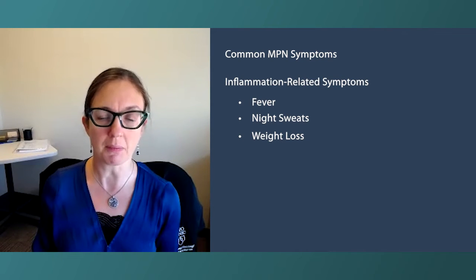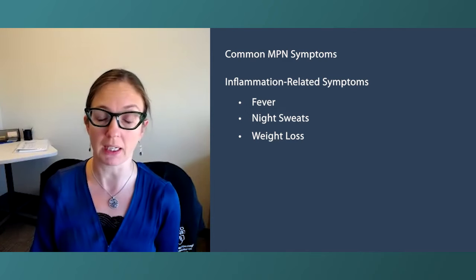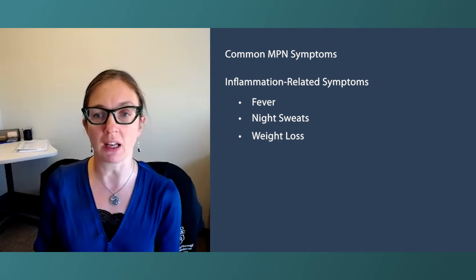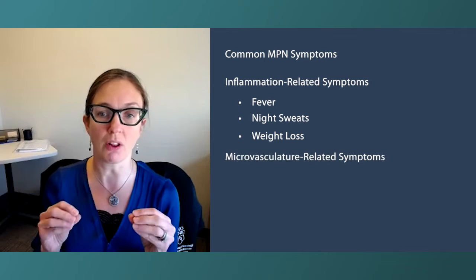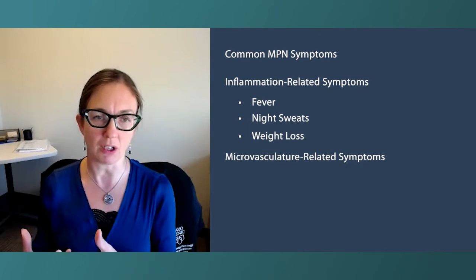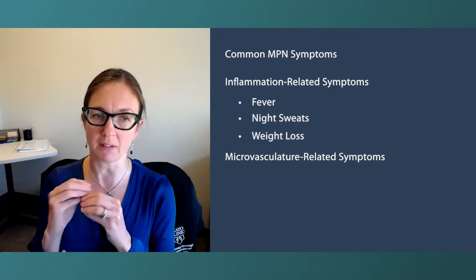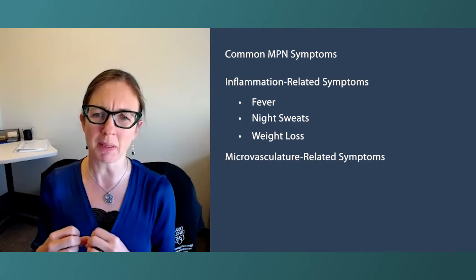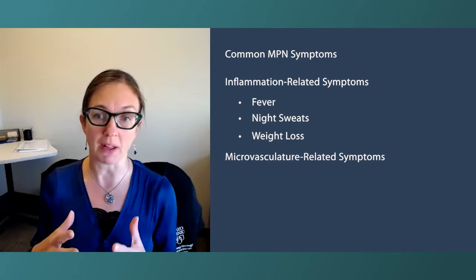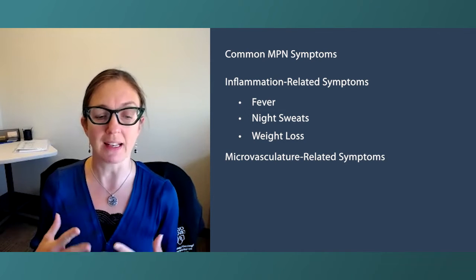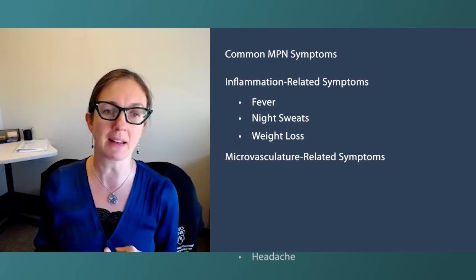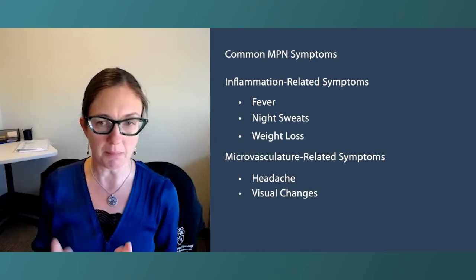These inflammation symptoms seem to be much more prevalent in patients with MPNs across all types. The next set of symptoms is related to microvasculature — all the little blood vessels. It's probably more related to the actual dysregulation of the JAK2 pathway, which is inherent to all the myeloproliferative diseases. As a result, the little blood vessels can clamp down, giving people headaches, visual changes, and numbness and tingling in the hands and feet.